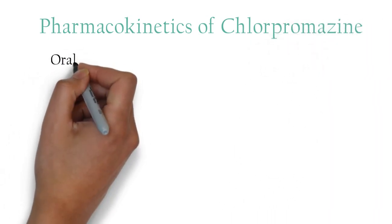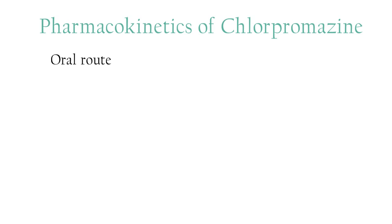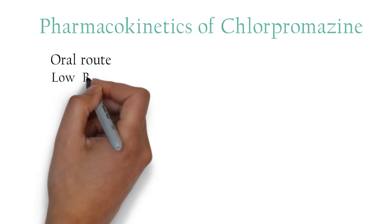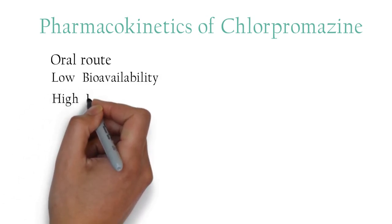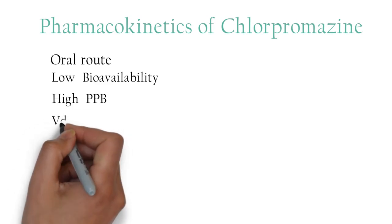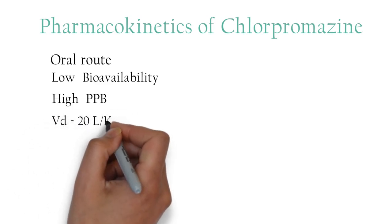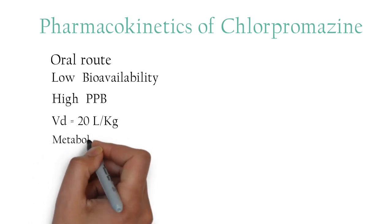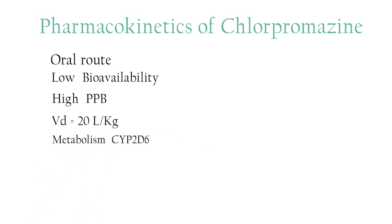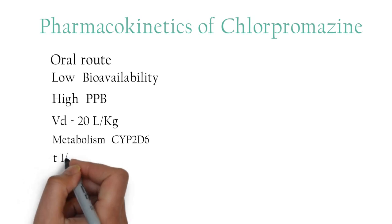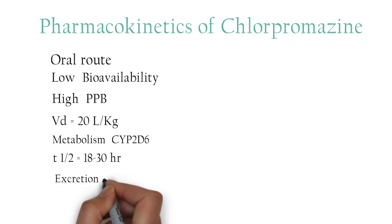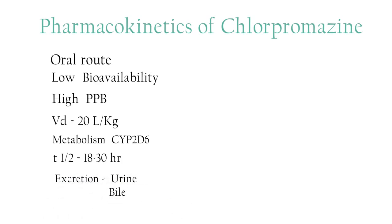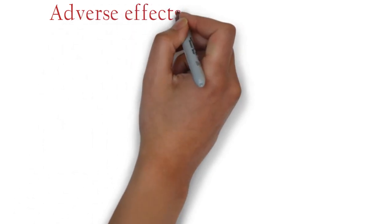Moving to the pharmacokinetics of chlorpromazine: the drug can be taken orally, but absorption is erratic and irregular. It has low bioavailability and high plasma protein binding. The drug is more concentrated in the brain than in plasma and has a large volume of distribution of approximately 20 L/kg. It is metabolized by the liver enzyme CYP2D6, has a half-life of approximately 18 to 30 hours, and is excreted in urine.